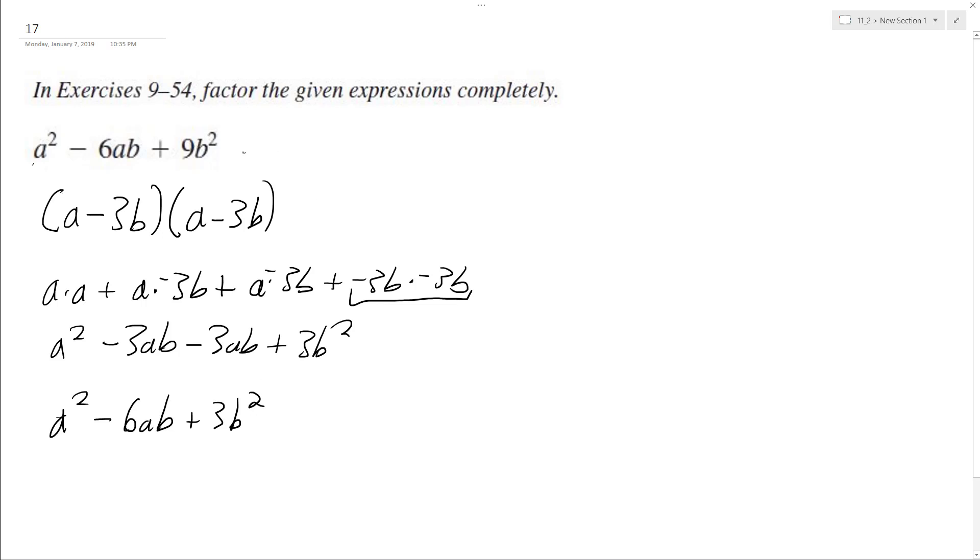And because this matches up with our original expression, that means our factorization here of a minus 3b times a minus 3b is correct. Or you could just write it as a minus 3b squared. And that's it.